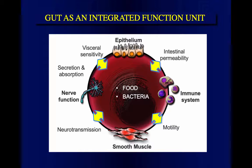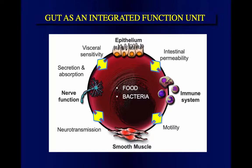In the stomach and small intestine we also have specialized cells called pacemaker cells, similar to what we have in the heart. These are the cells which trigger the signal and trigger the actual contractions.